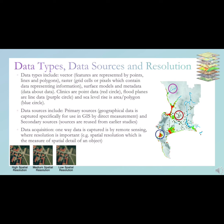Data types include vector data, which are features represented by points, lines, and polygons. Raster data, represented by grid cells or pixels, which contain data representing information. Surface models and metadata, which is data about data.